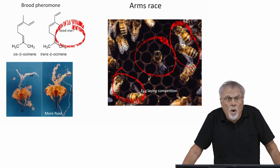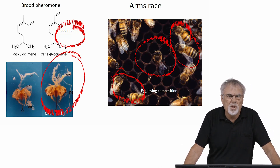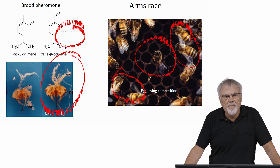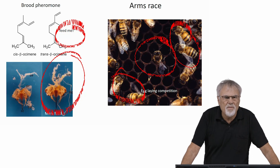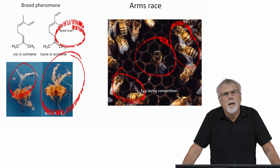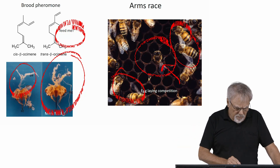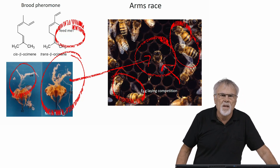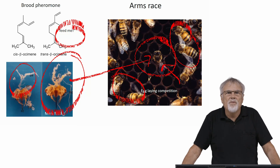Workers that get fed more as larvae have larger ovaries and more ovarials when they emerge — there is a direct relationship between what they eat and the status of their ovaries. Those with more ovarials, having eaten more as larvae, have more developed ovaries early in life. When conditions are right for workers to lay eggs, individuals with more developed ovaries are more likely to become laying workers. So the competition for egg-laying status begins in the larval stage, when they are competing for food from the nurses.